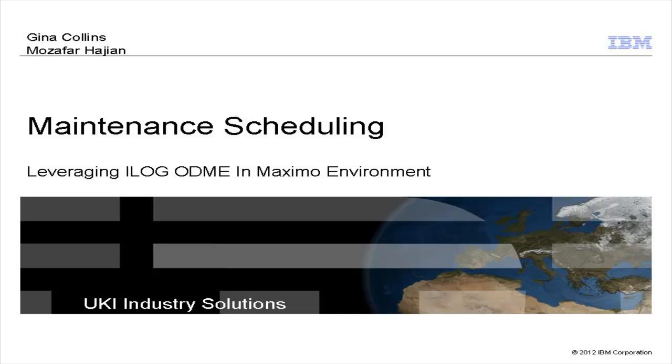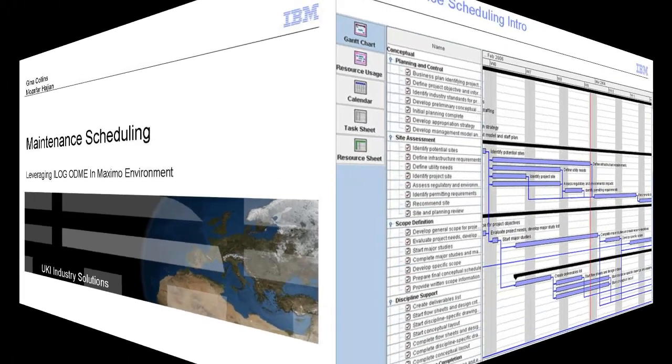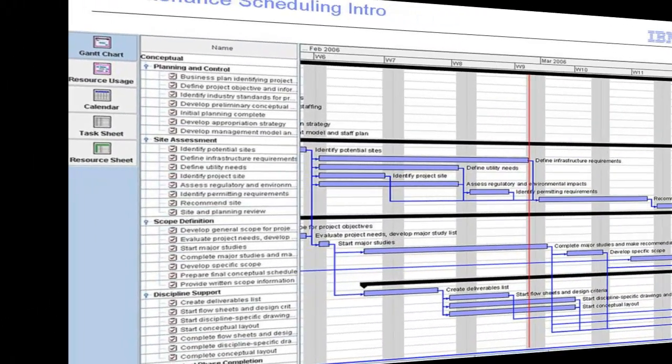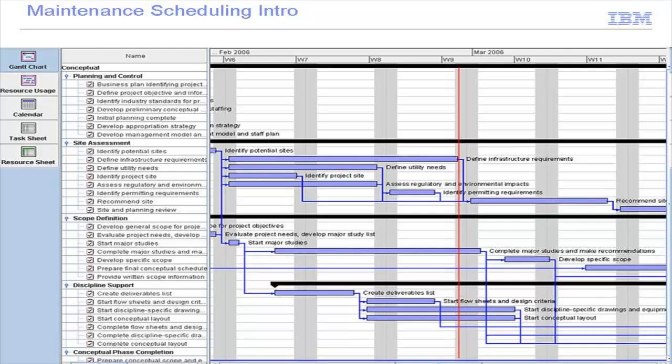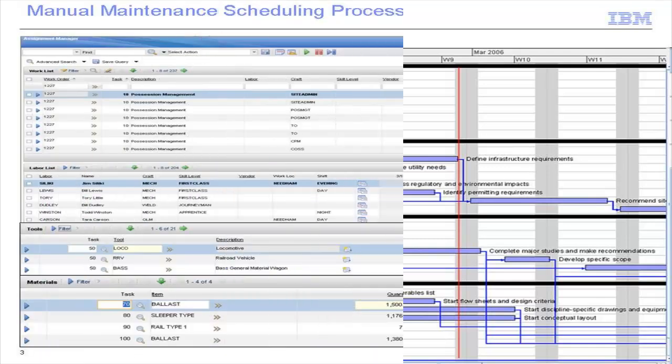Welcome to our maintenance scheduling in an integrated environment demonstration. Maintenance scheduling can be seen as the process of assigning labour, tools and materials to a set of tasks and deciding the start and end time of each task, while taking into consideration any interdependencies that exist between tasks.